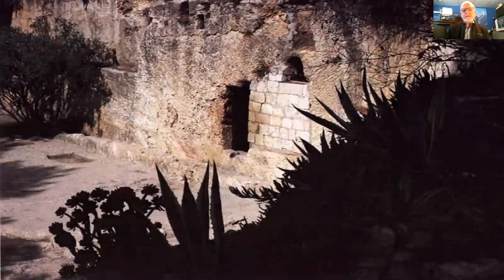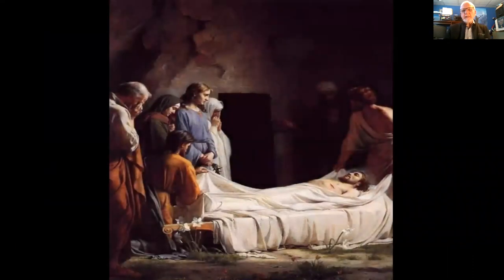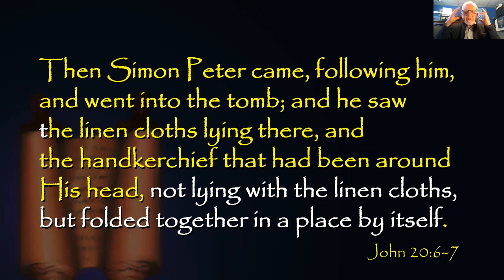For since by man came death, by man also the resurrection of the dead. For as in Adam all die, even so in Christ all shall be made alive, but each one in his own order — Christ the First Fruits, afterwards those who are Christ's at his coming. So Christ is the First Fruits and he was called forth. One last thing before I close — talking now about the resurrection, there's something very different in John's Gospel. It talked about Jesus being laid there, and then he rose from the dead, and the disciples came. Simon Peter went into the tomb and saw the linen cloths lying there, and the handkerchief that had been around his head — not lying with the linen cloths, but folded together in a place by itself.